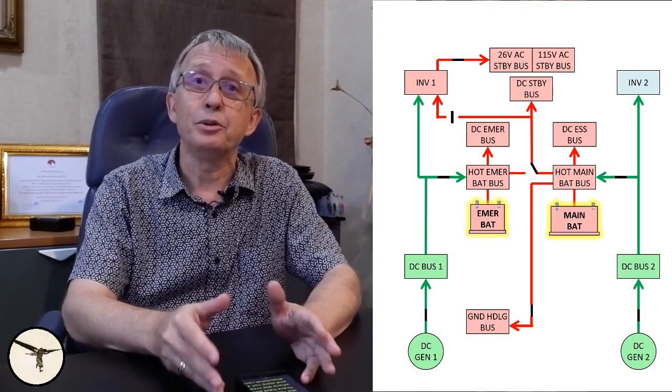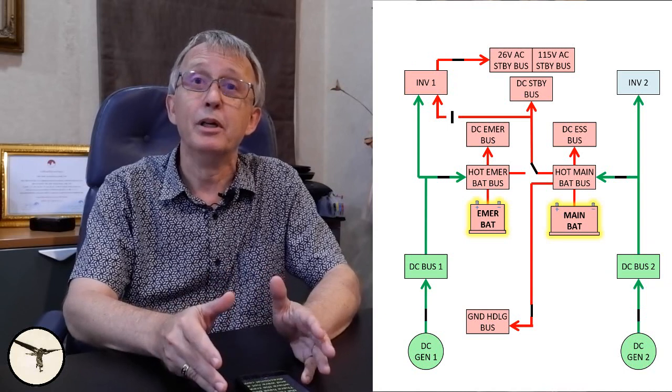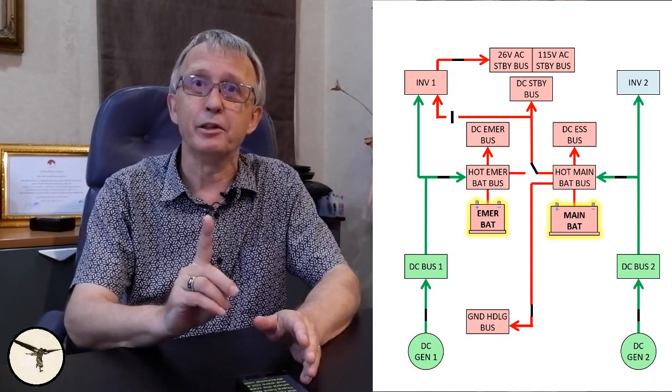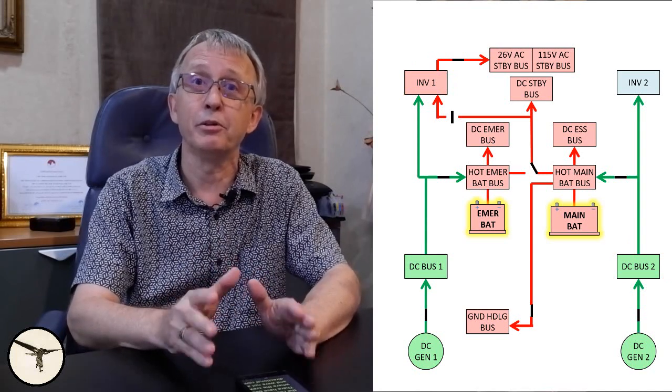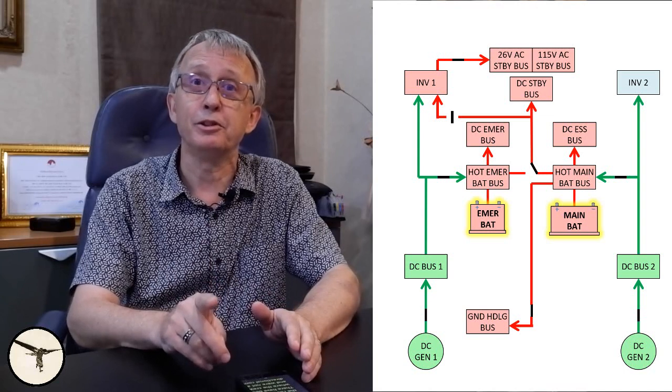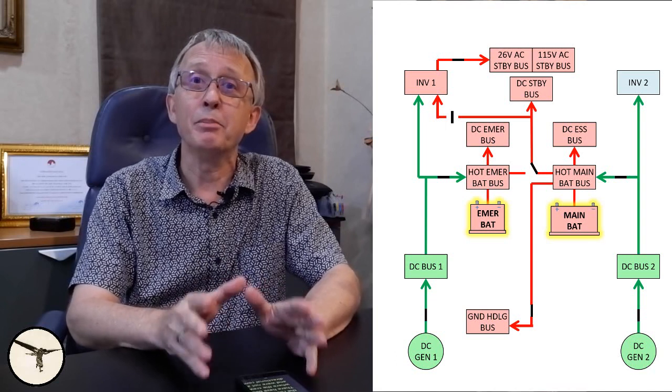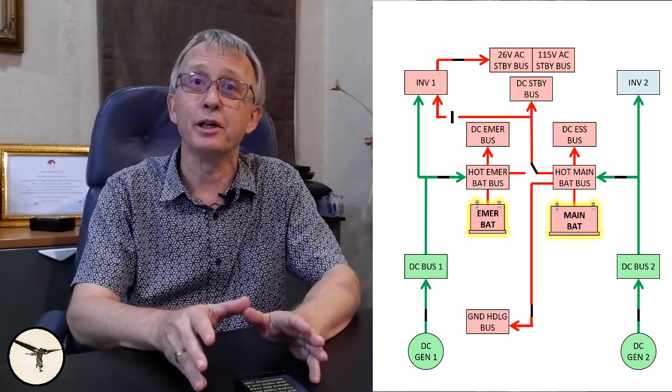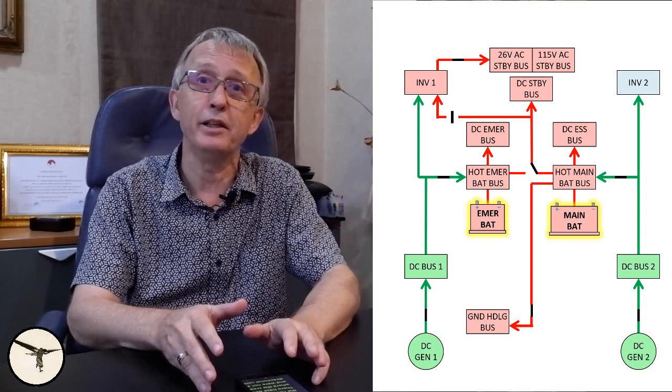DC gen 2 supplies DC bus 2, the other main bus. And pay attention now, because this bus bar powers the automatic function of the hydraulic auxiliary pump and the automatic function of the rudder travel limit unit, the TLU. There have been some incidents where the crew missed those items and were not able to maintain directional control after landing.